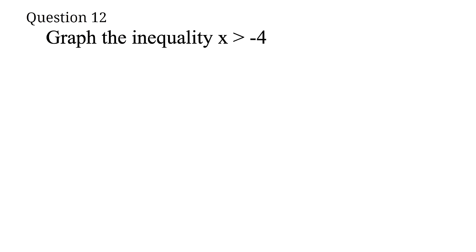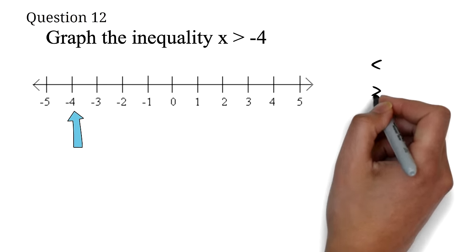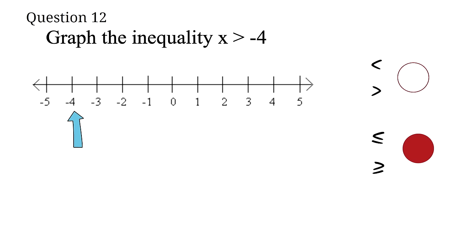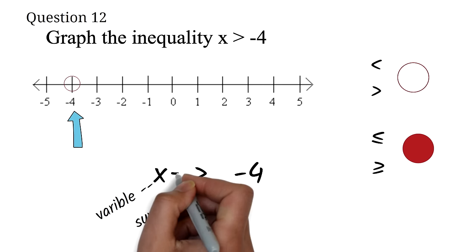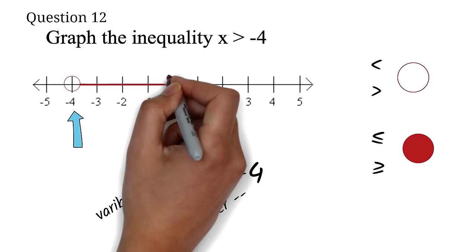Question 12: Graph the inequality x greater than negative 4. Here we are looking at graphing inequalities on a number line. The first thing is to locate your point, which is negative 4. Then draw a shaded or unshaded circle at that point. If you have less than or greater than, the circle will not be shaded. If you have less than or equal to, or greater than or equal to, use a shaded circle — basically, if it has an equal to, you shade. Since this is just greater than, we will not shade the circle. Then draw an arrow. The easiest way to always get the direction right: make sure your inequality is in the form variable, inequality sign, number. The direction of your arrow will be the same as the direction of the inequality sign.